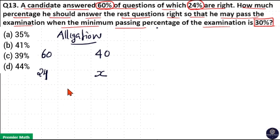The passing mark is 30%. That is, 24% from this 60% and x% from this 40% will equal 30%. So 24 and x together must equal 30, which is the passing mark.